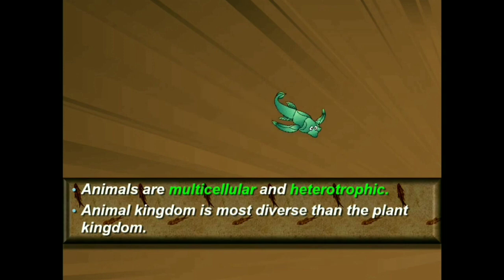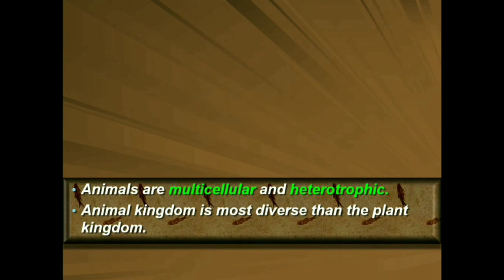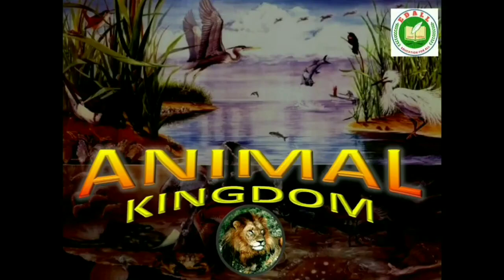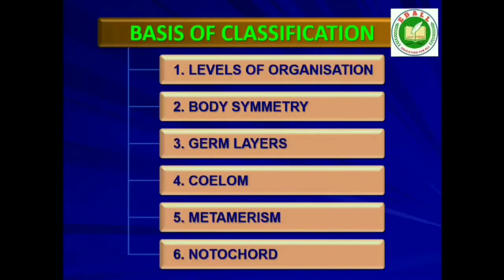The classification also helps in assigning a systematic position to newly described species. 4.1 Basis of Classification: In spite of differences in structure and form of different animals, there are fundamental features common to various individuals in relation to the arrangement of cells, body symmetry, nature of coelom, patterns of digestive, circulatory or reproductive systems. These features are used as the basis of animal classification.